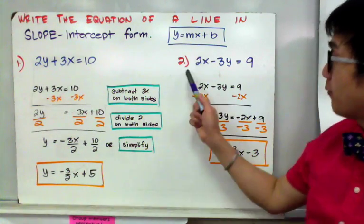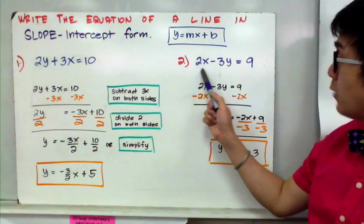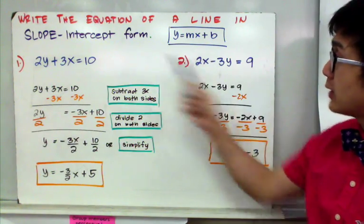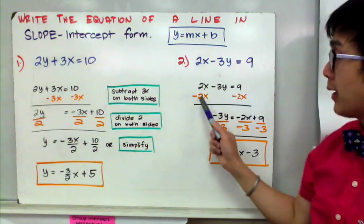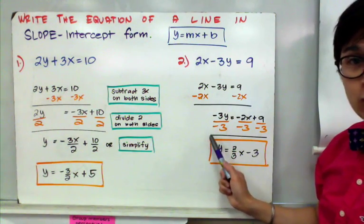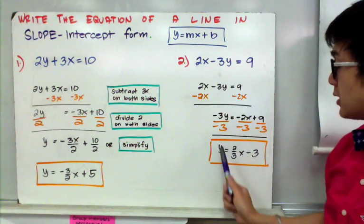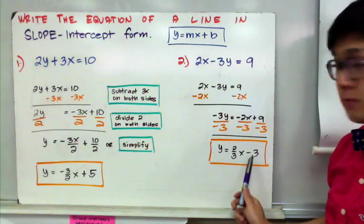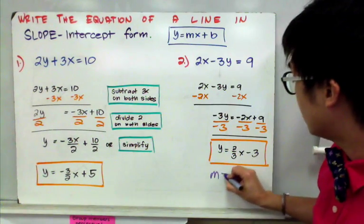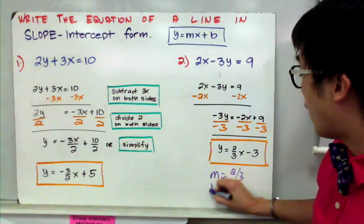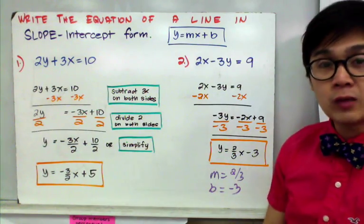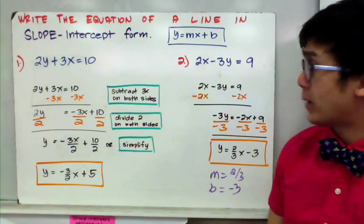For example number 2, we have 2x minus 3y equals 9. Since this is also in standard form, we change it into slope-intercept form by subtracting 2x on both sides and then dividing by negative 3 on all terms. We end up with y equals 2/3 x minus 3, where the slope is equal to 2/3 and the y-intercept is equal to negative 3. That is how we write our equation in the slope-intercept form.